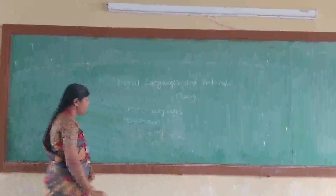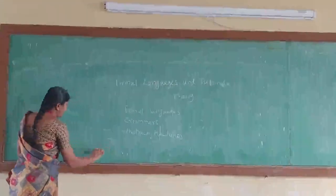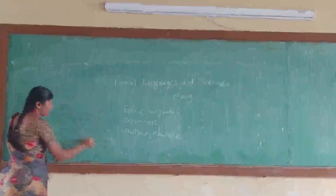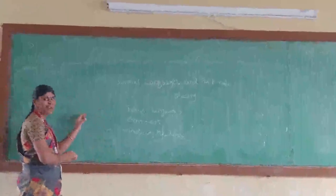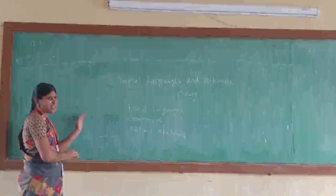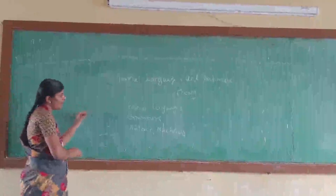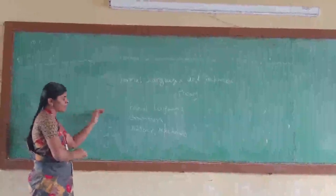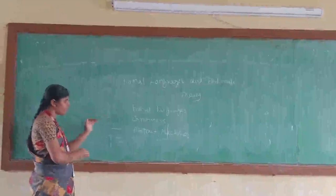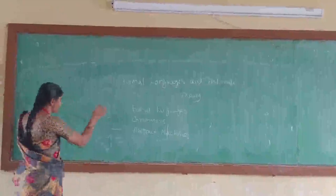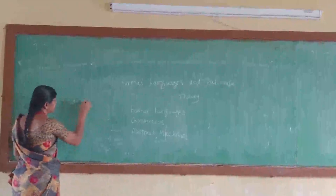In abstract notions, we have four important abstract machines. These are abstract notions of a mathematical model — it is not a physical device. It accepts formal languages, takes an input, and gives the answer as either yes or no.